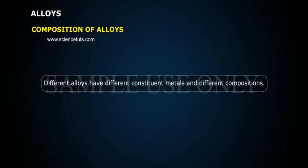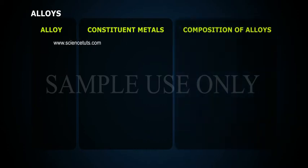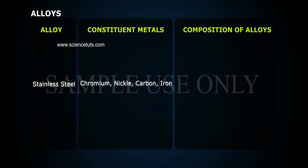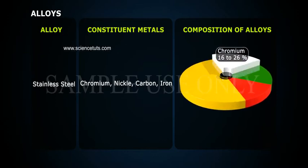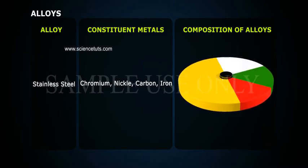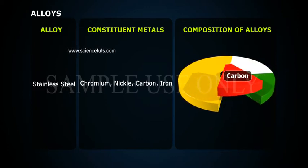Composition of Alloys. Different alloys have different constituent metals and different compositions. Stainless steel is composed of iron, chromium 16–26%, nickel 6–22%, and remaining carbon.